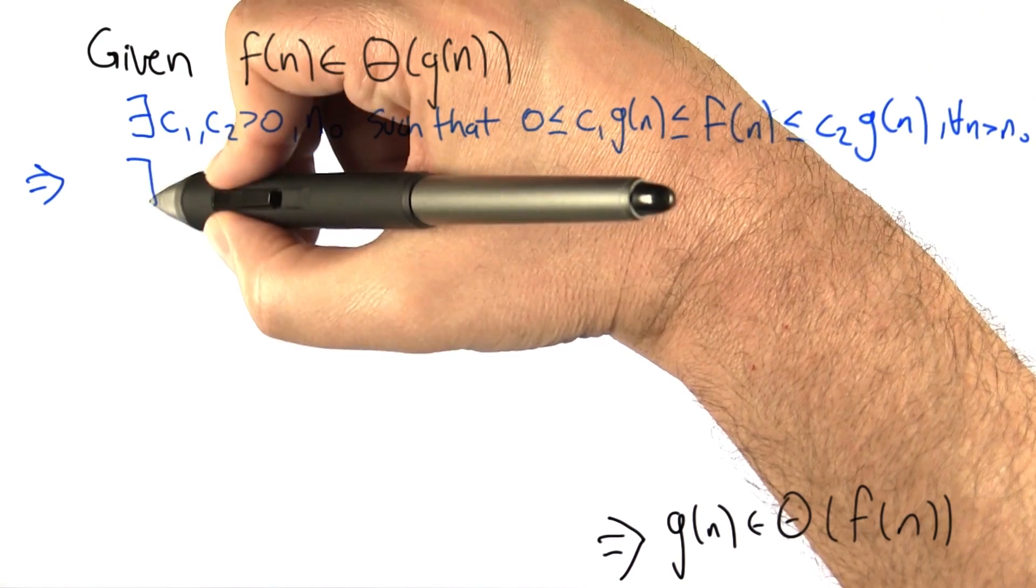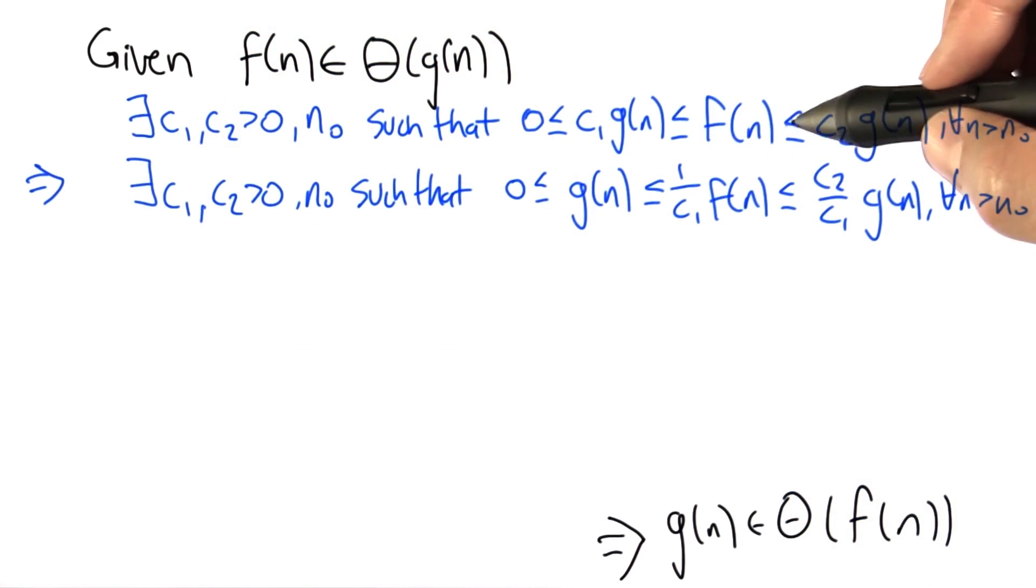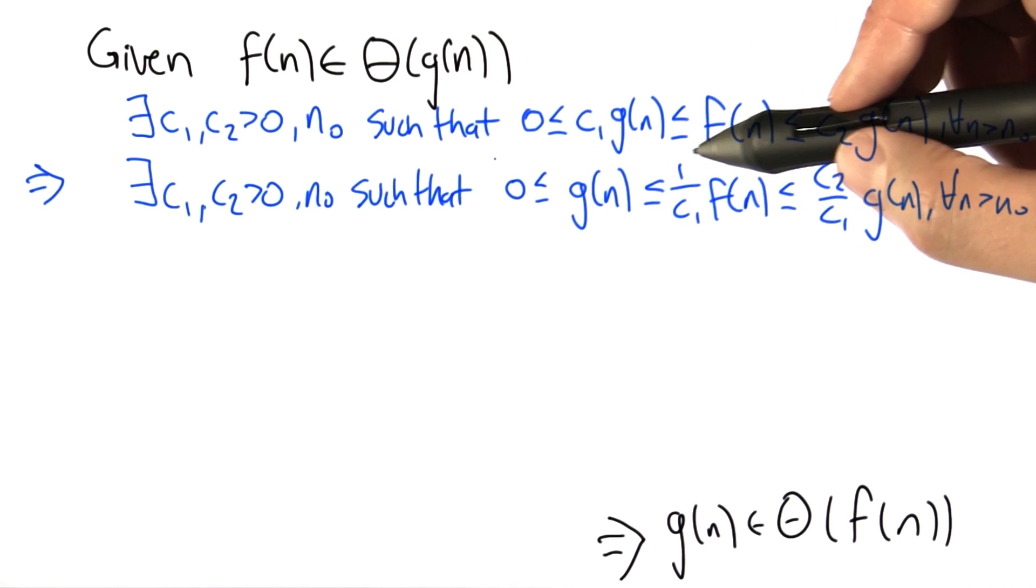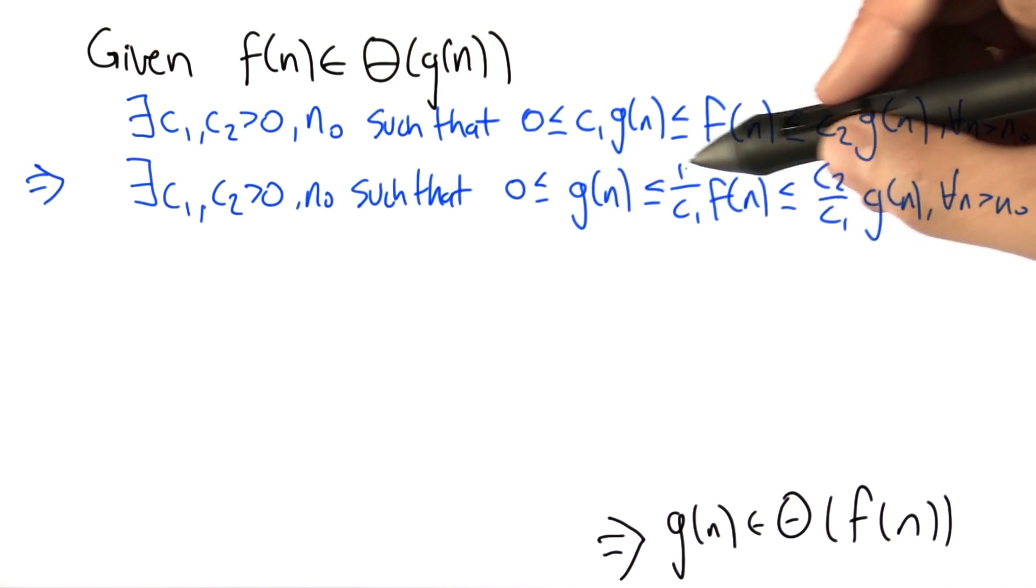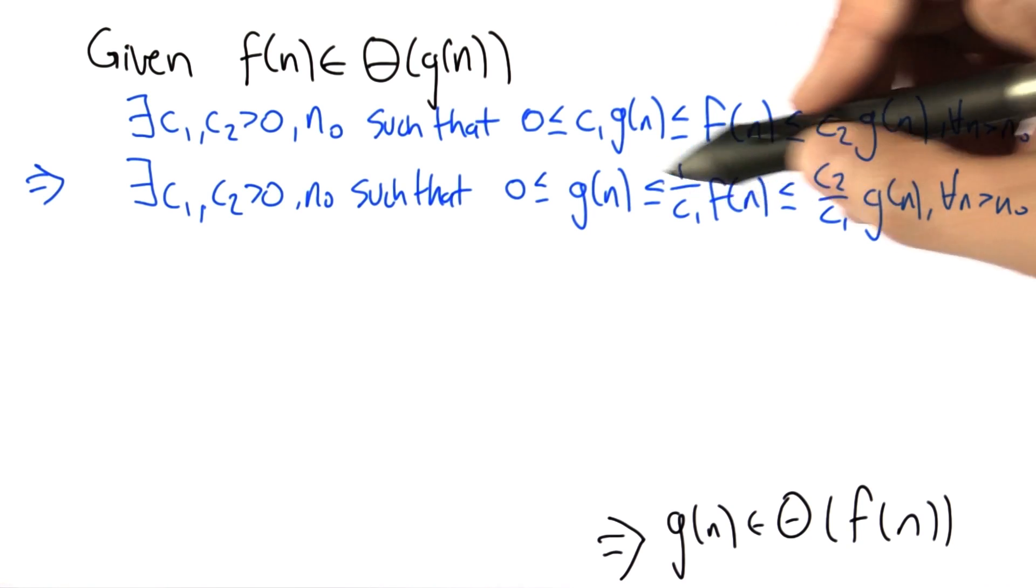We can infer from this that by dividing through this equation by c1, which is a positive number, we get a new set of inequalities where g of n is now sandwiched between 1 over c1 of f of n and 1 over c2 of f of n.